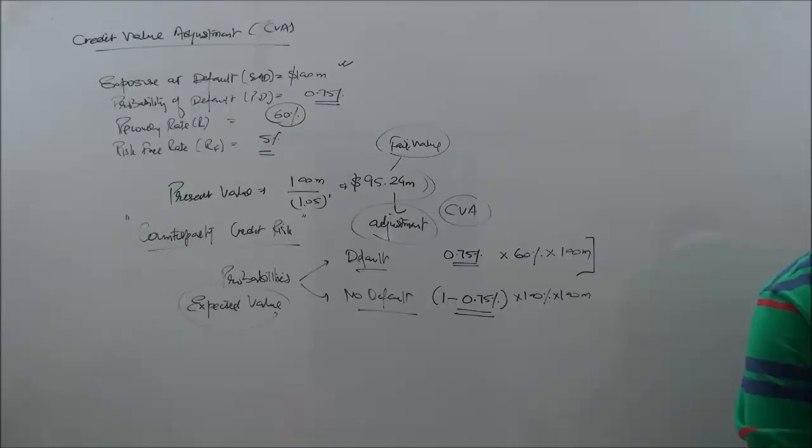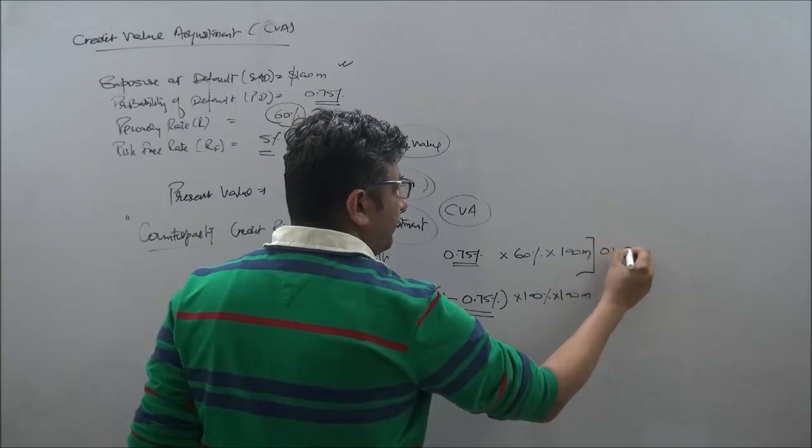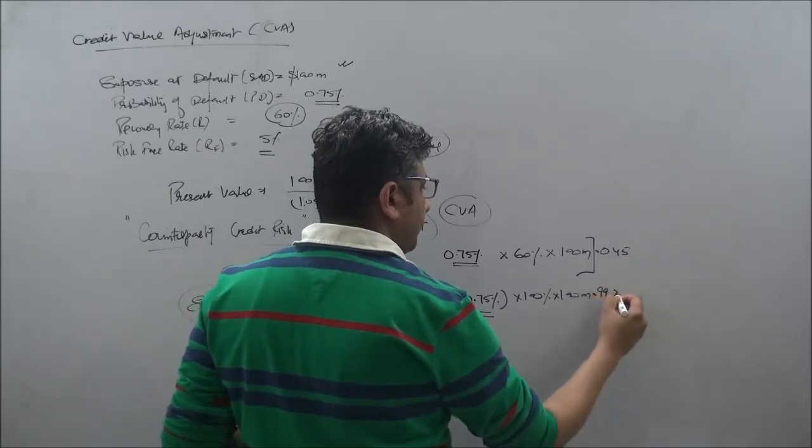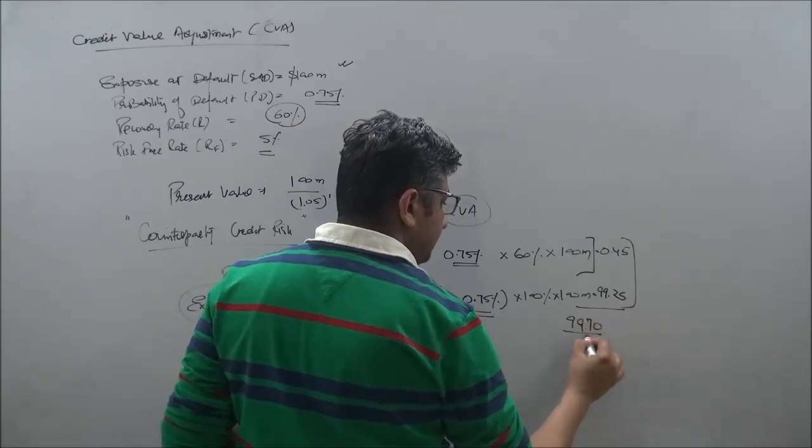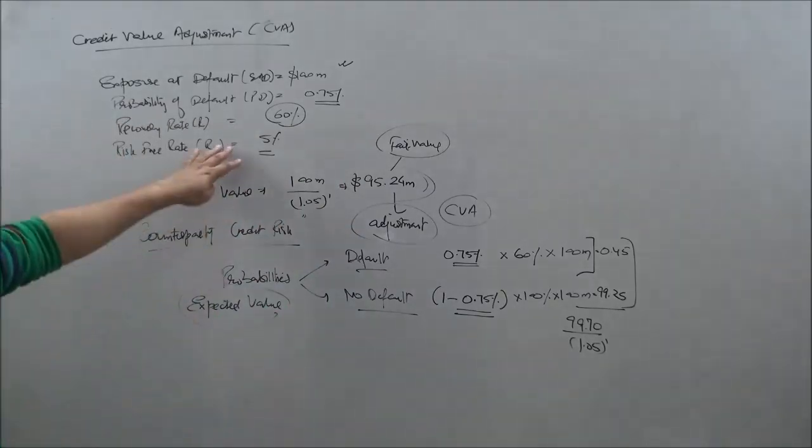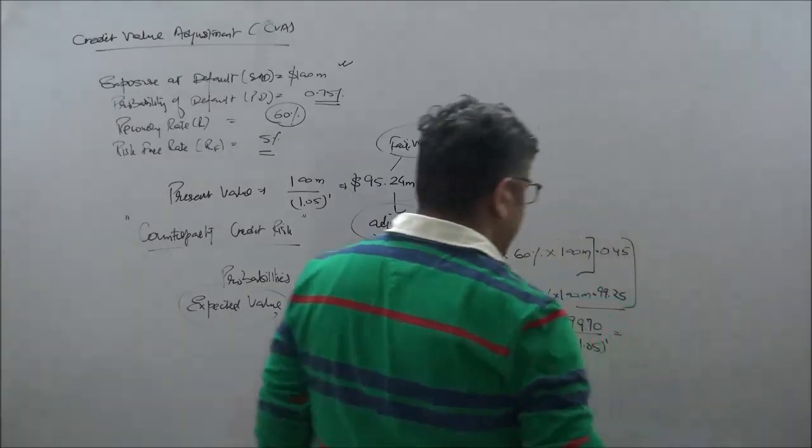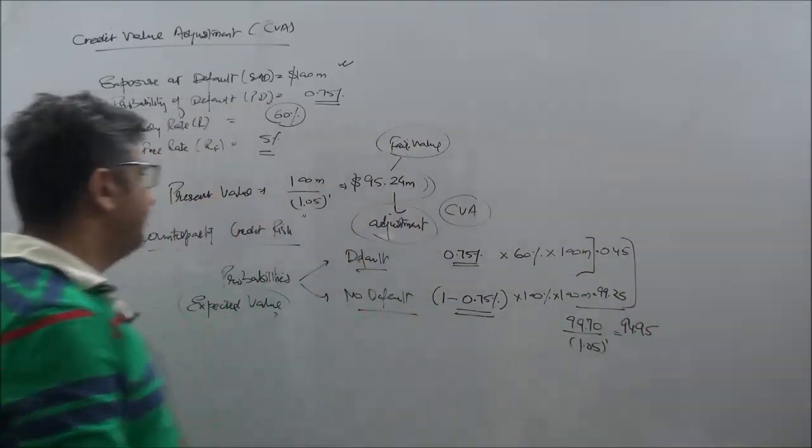So we have got these two values which are 0.45 and this is coming at 99.25. This gives me a total of, of course, 99.70 taking the discounted value with a 5% discount rate. We come to a number which we have calculated as 94.95 here.